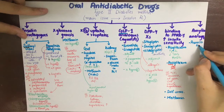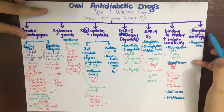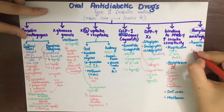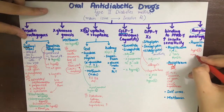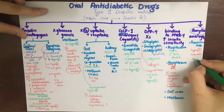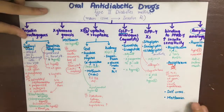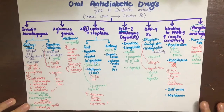Lastly, we have the amylin analog pramlintide. It performs all the functions of amylin and is given subcutaneously before meals. It will decrease glucagon secretion, delay gastric emptying, decrease appetite, and decrease weight. It can cause hypoglycemia and nausea.